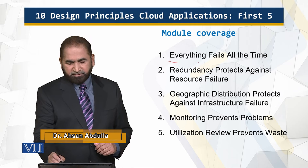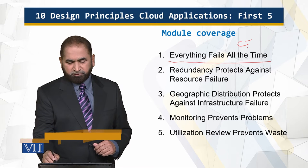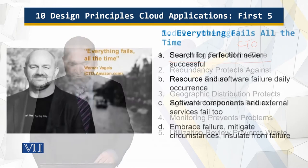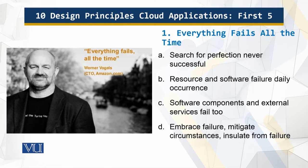The first design principle is the very famous quote by the Chief Technology Officer of Amazon. As per the CTO of Amazon, everything fails all the time. IT departments have traditionally attempted to render both infrastructure and applications impervious to failure — a hardware resource or application component that failed increased the urgency to search for perfection in order to banish failure.